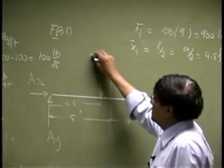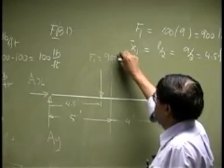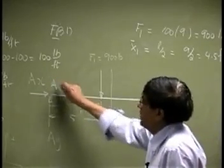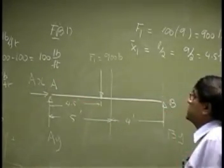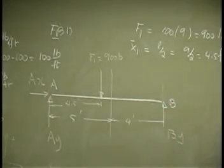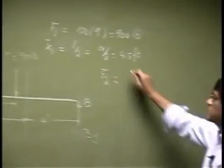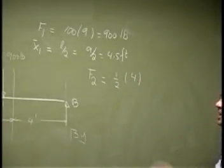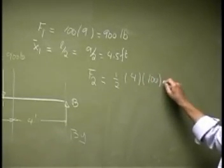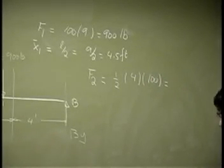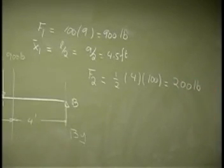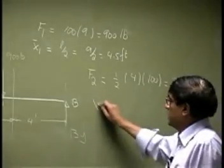This point is A and this point is B. Then the second force, F2, that's a triangle. It's one half, it acts on a length of 4, and it has a height which is 100. So the magnitude here is going to be 200 pounds.